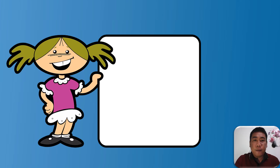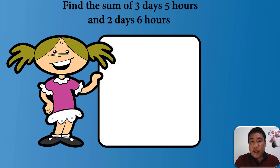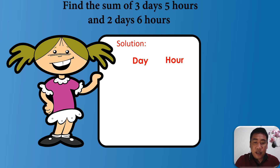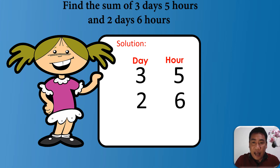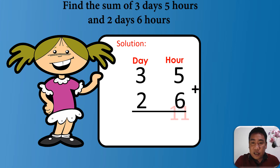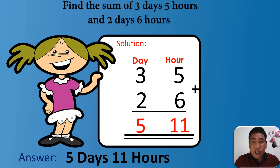Addition of time. Find the sum of three days, five hours and two days, six hours. For our solution, we are going to write the two units, days and hours. Then let's write three days, five hours and two days, six hours, and the add sign. First, we are going to add the hours: five plus six equals 11. Next, we add the days: three plus two equals five. So our final answer will be five days, 11 hours.